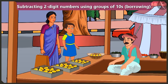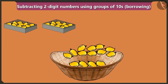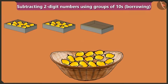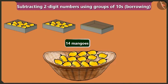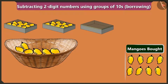Come on, child. I will empty one box of ten mangoes into this basket. So look, now there are ten and four — fourteen mangoes in this basket. Bubbly, now tell me, if you buy eight mangoes out of the fourteen mangoes, how many mangoes would the fruit seller be left with?